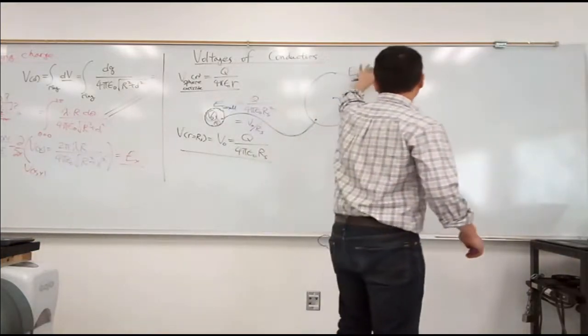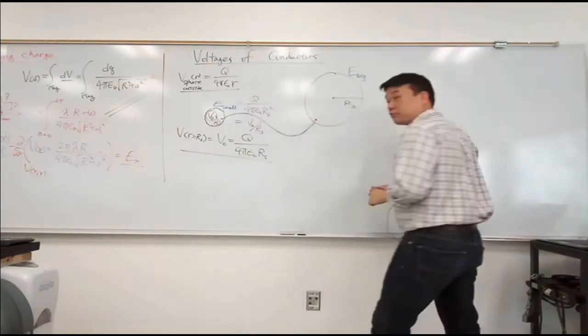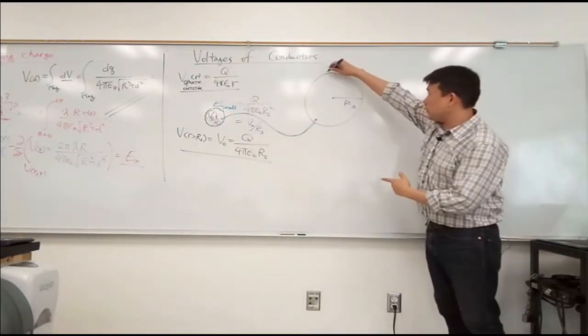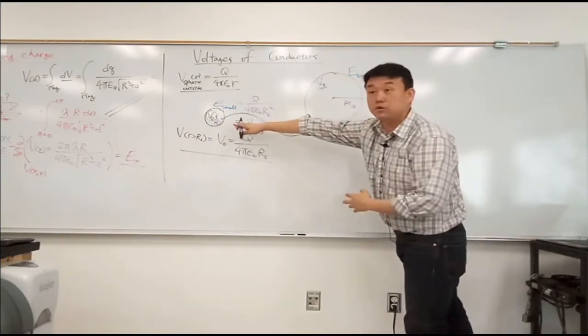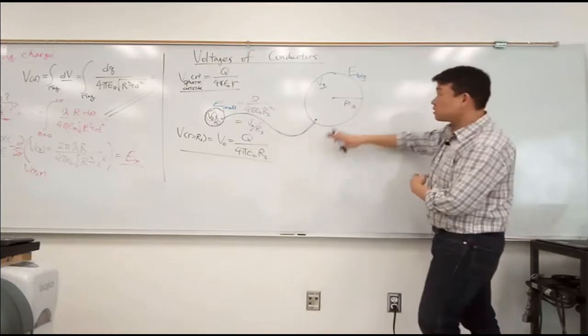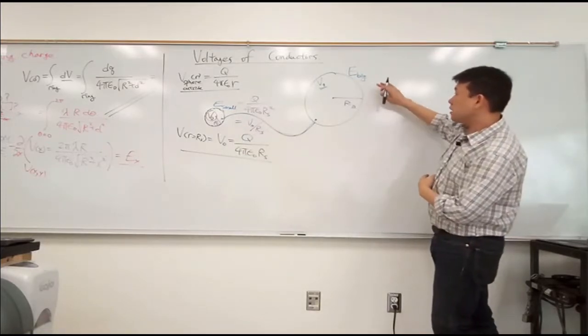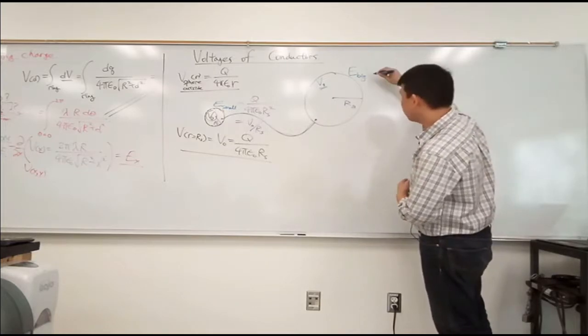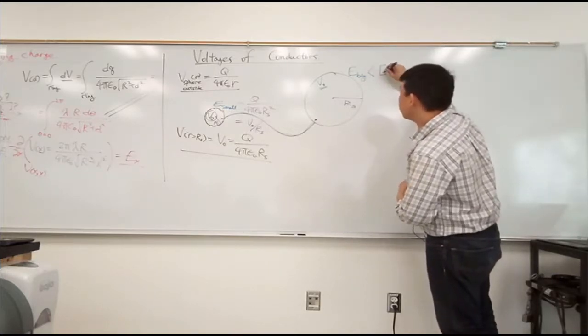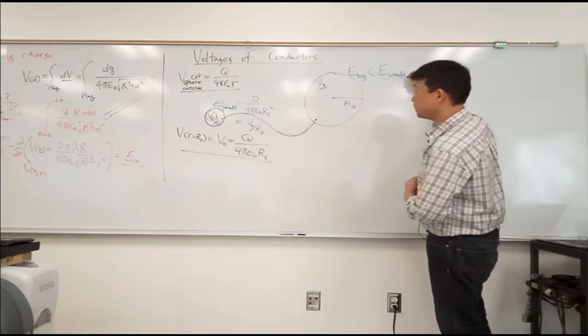And I guess I don't have enough time to derive it. And when you look at it, one of the surprising results that you will get is that electric field out, so this conductor is at the same voltage as the small sphere. And the result you get here is that the electric field outside of the big conductor will be smaller than the electric field outside of the small conductor.